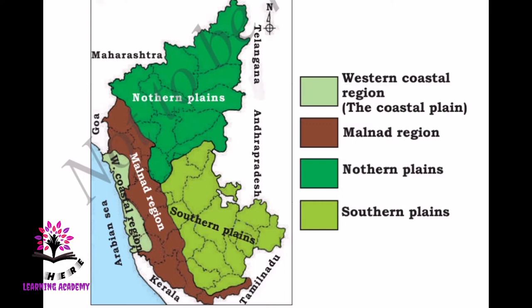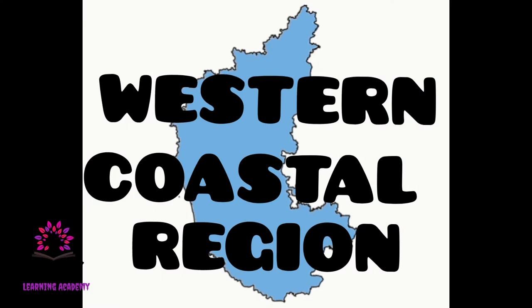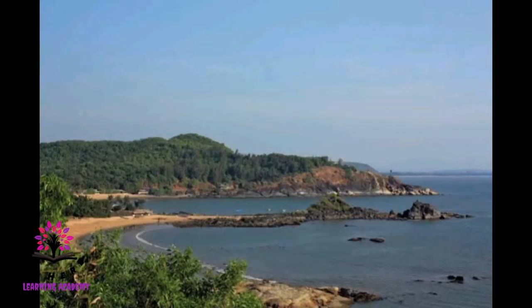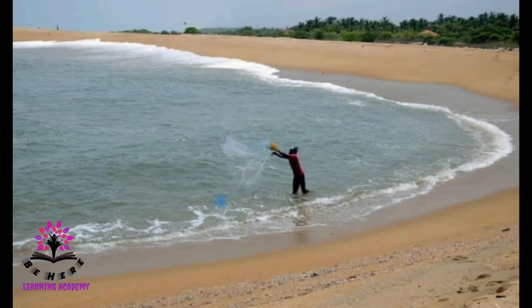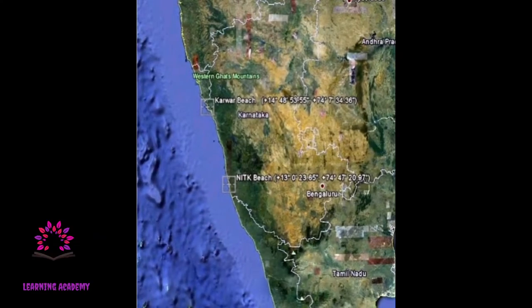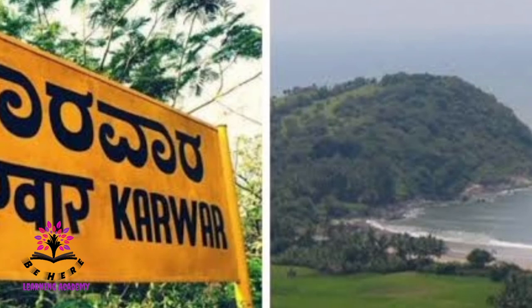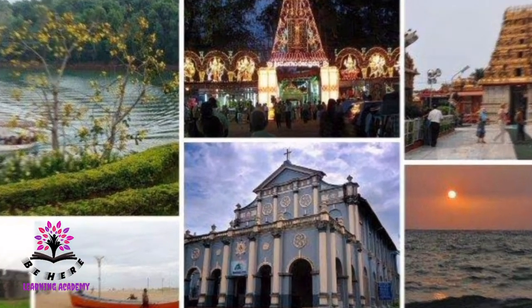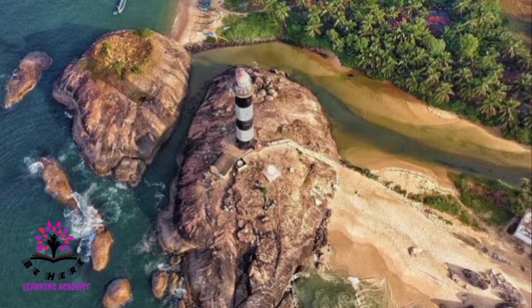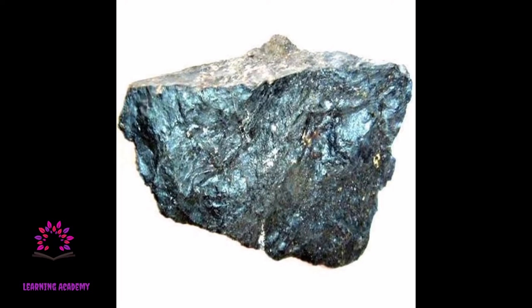Now let us learn about each one in detail. The Western Coastal Region is the area along the Arabian Sea on the west of the state. It is also called the Konkan Coast and is about 240 kilometers in length. Karwar, Mangaluru, and Udupi are the main cities of this region. Iron and manganese are the main minerals of this region.